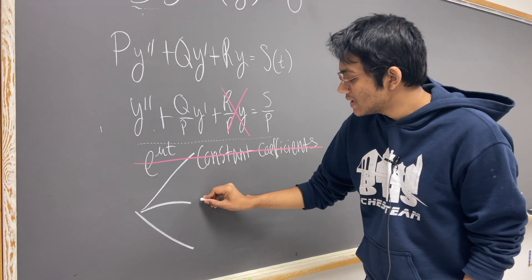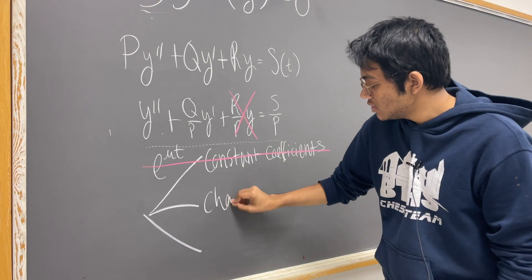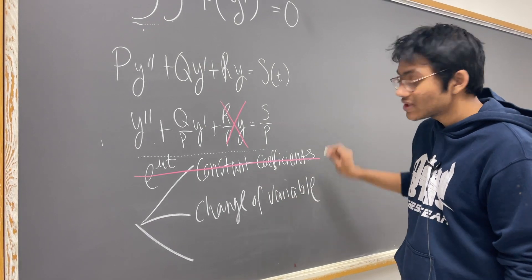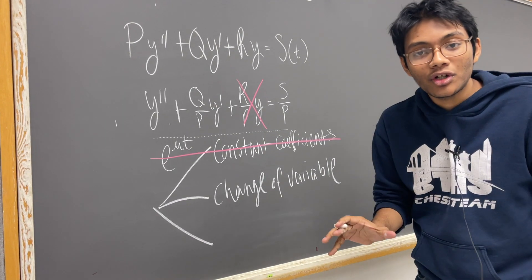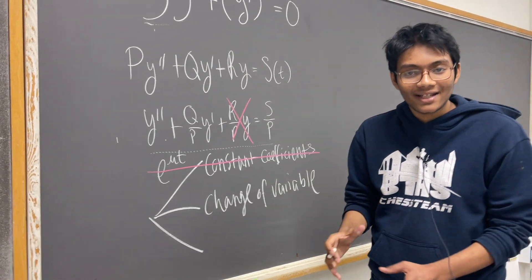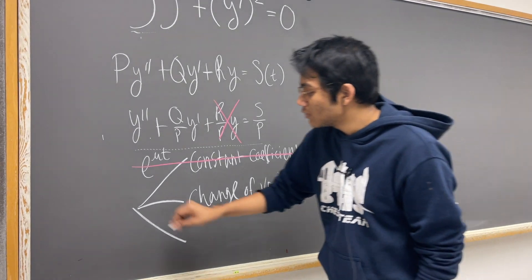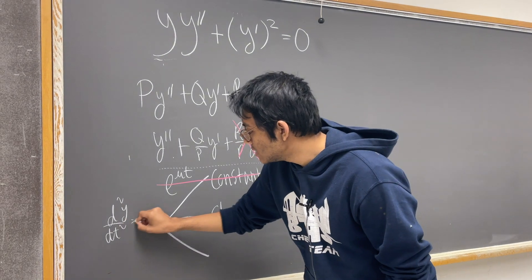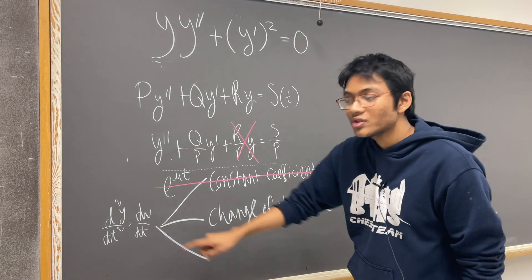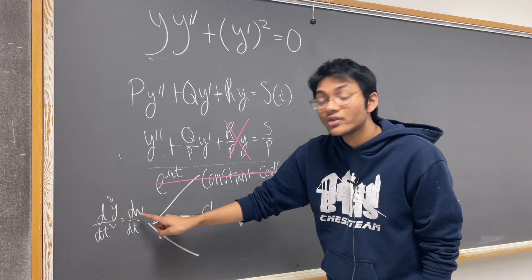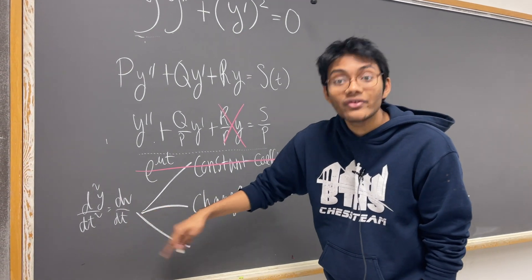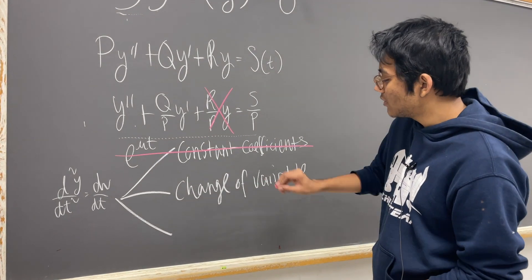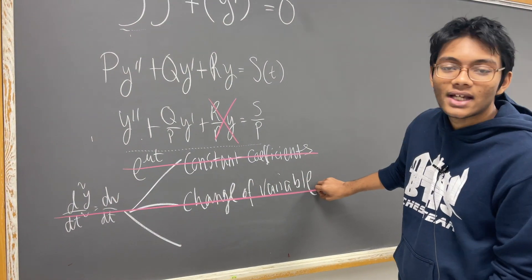Another way we could do it is change of variable. What that involves is, almost like magic, we turn a second-order differential equation into a first-order one. We replace d²y/dt² with dv/dt — so wherever you see a second-order derivative, replace it with the first-order derivative, and wherever you see a first-order derivative, replace it with v. Sadly, if you go ahead and try to execute this second method, it will turn out to be a failure.